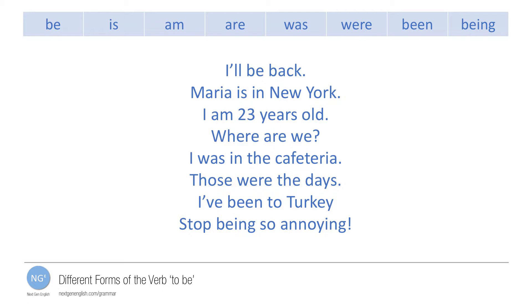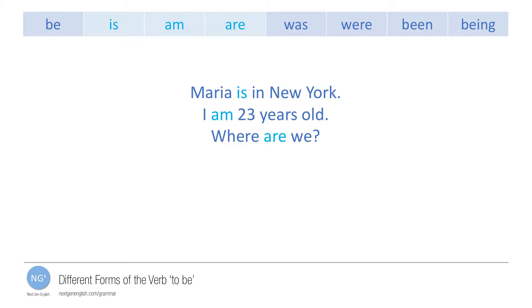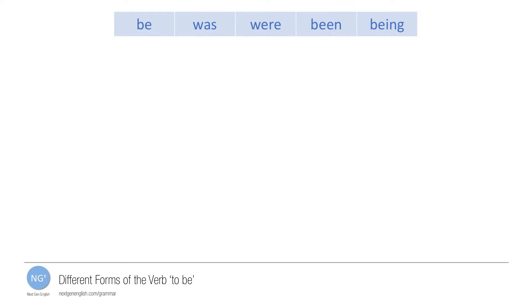To learn more about the forms is, am, and are, watch our video on the verb to be in the present simple. The rest of this video covers other forms of to be.